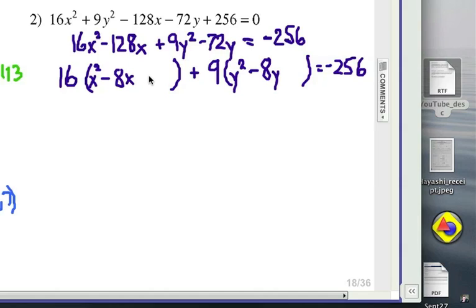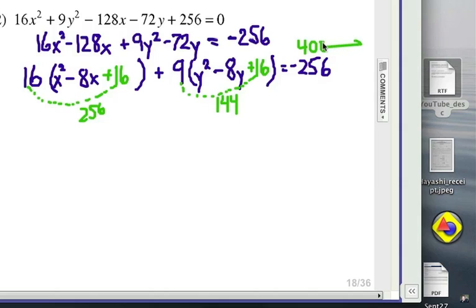All right, the third term here must be half of negative 8 is negative 4. Square it to make 16. Half of negative 8, again, is negative 4, and square it to make 16. All right, now it's a little bit tricky here, but take a look. 16 times 16 is what I actually added, and 9 times 16 over here. That's 256 and 144, and so I add the total there, which is actually 400 on the right. So on the left I'm adding 400, and on the right I'm adding 400, keeping it balanced.